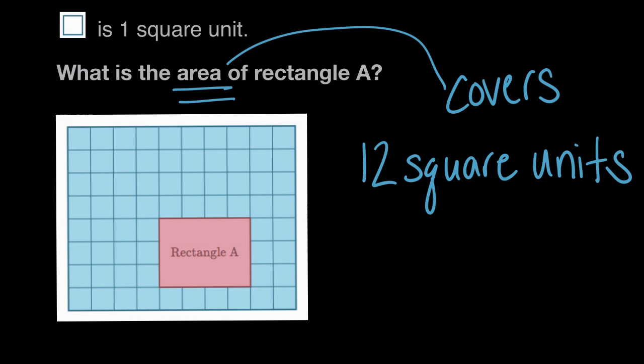Or, we could go even farther than that. We could have done three times four, or we could look at this and say, okay, here's one column. This column has three square units. It has a length of three. One, two, three. How many of these columns like this will there be?